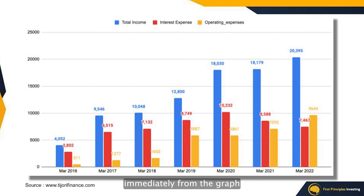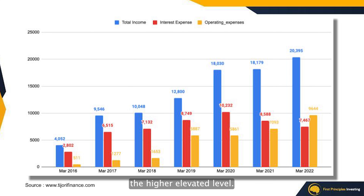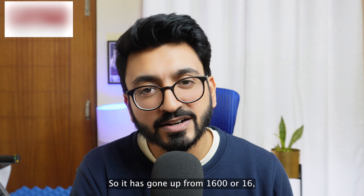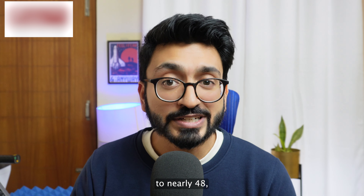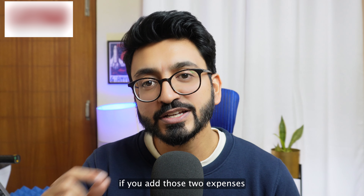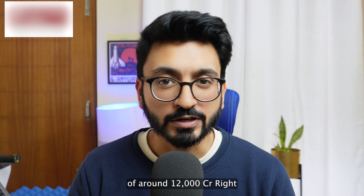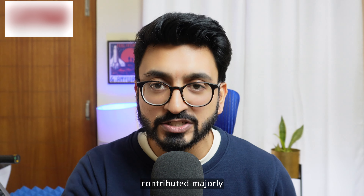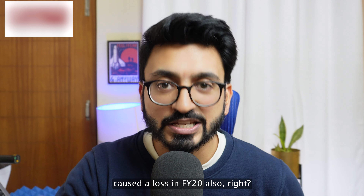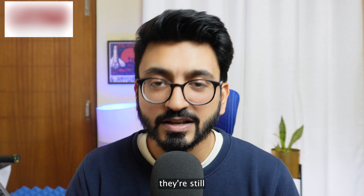Looking at the second expense — operating expenses — from the graph it becomes very obvious. The yellow column representing operating expenses shot up sharply between FY18 and FY19, going from around 1,600 crores to nearly 4,800-4,900 crores in just one year, and has stayed at that elevated level. Adding interest expenses of around 8,000 crores and operating expenses of around 5,000 crores in FY19 gives 13,000 crores — more than the total income of around 12,000 crores. So operating expenses contributed majorly to the loss in FY19, but are not fully responsible for FY20's loss.